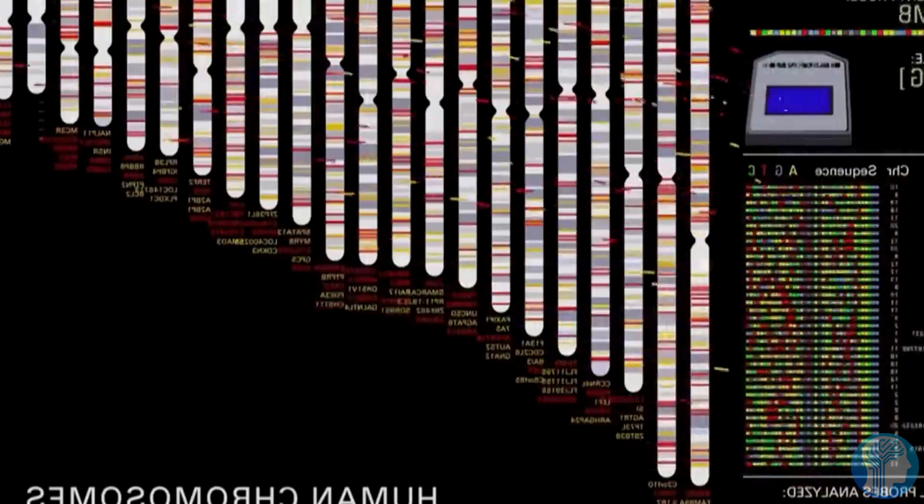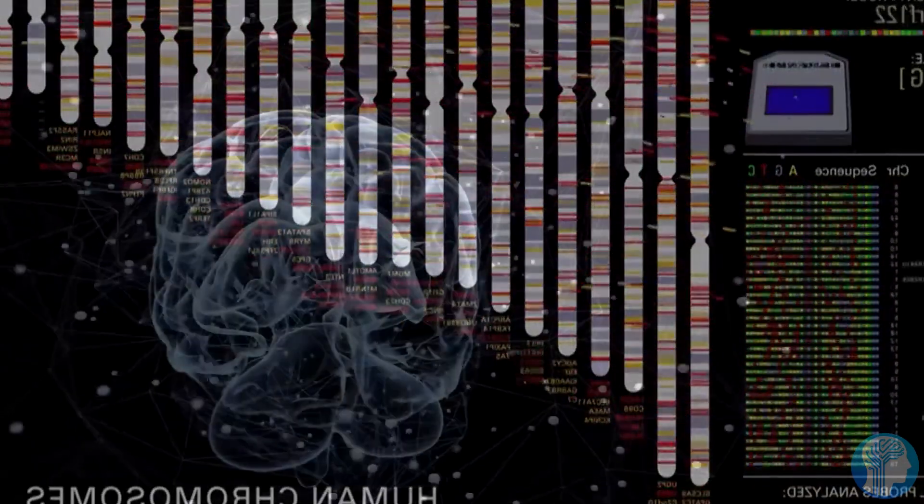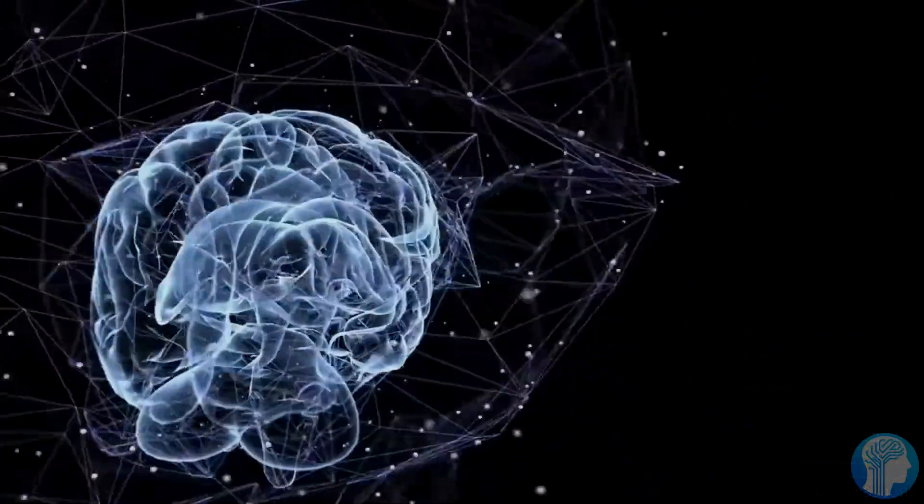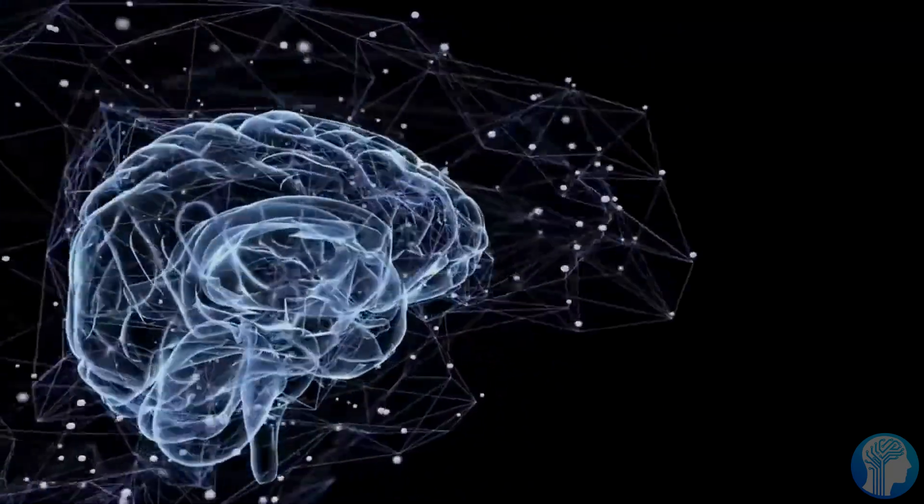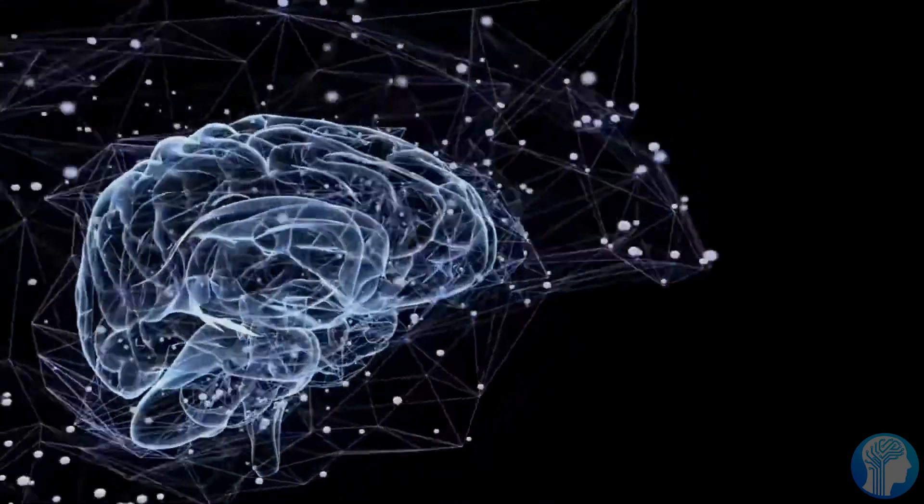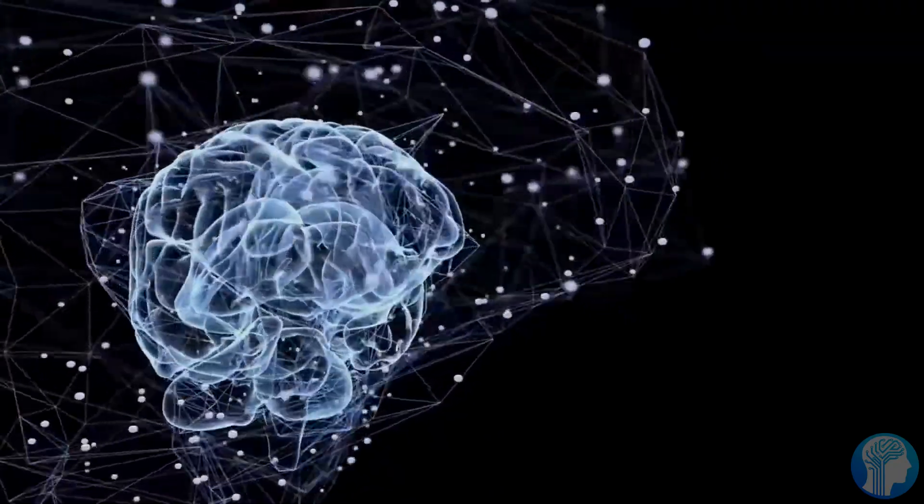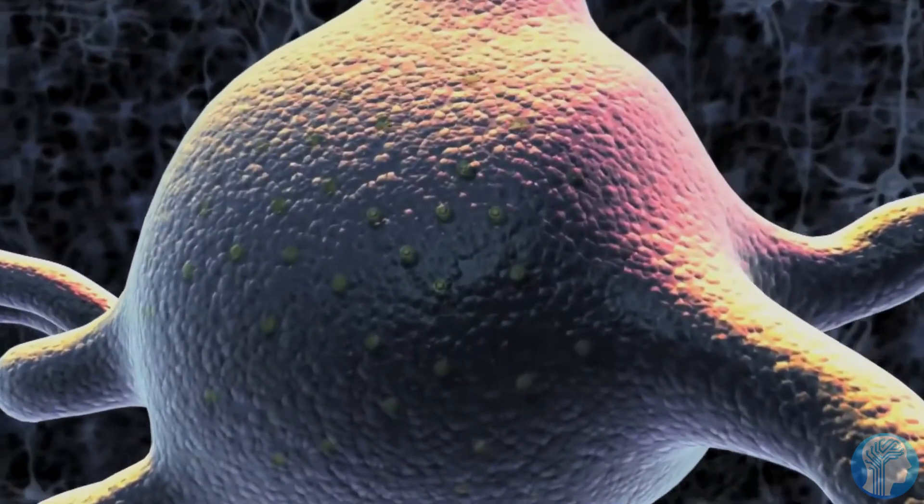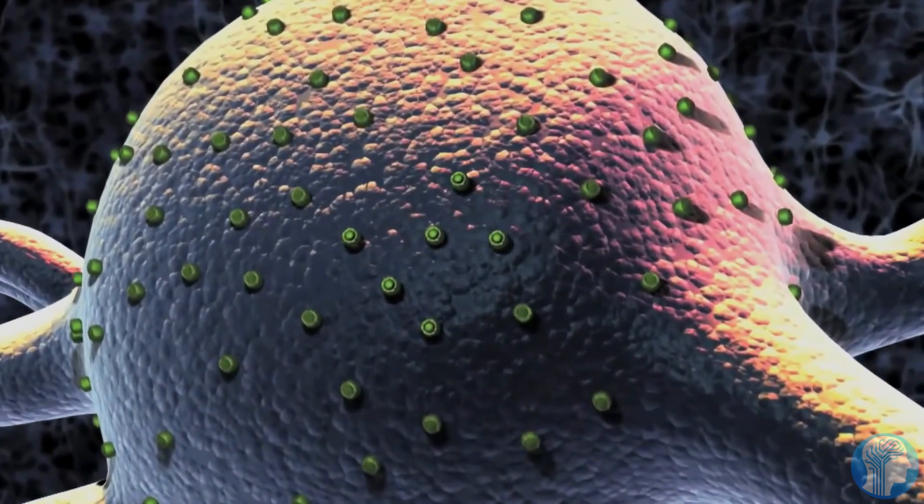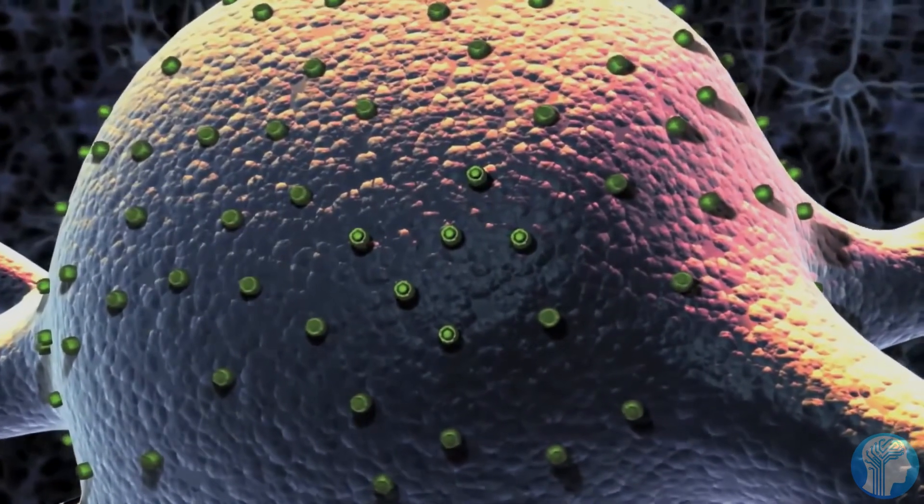And then there's the potential to eradicate genetic diseases. CRISPR's precision editing could offer hope to millions battling hereditary conditions. Imagine a world where diseases like cystic fibrosis, muscular dystrophy, and Huntington's become relics of the past. CRISPR could rewrite our genetic code, paving the way for healthier generations to come.